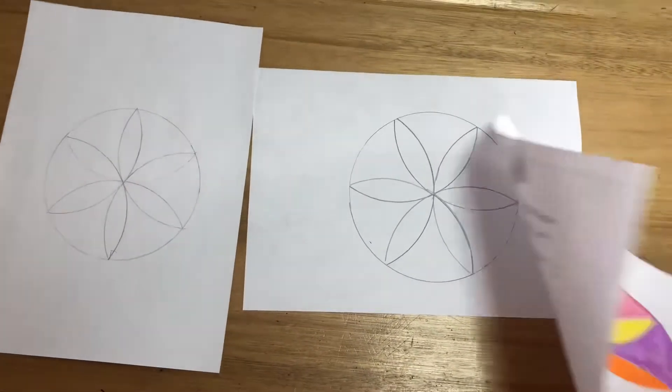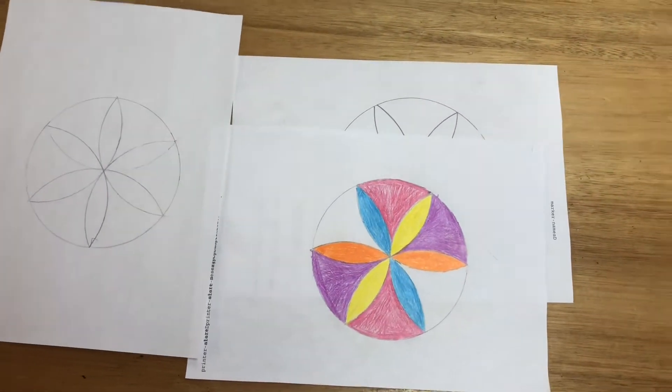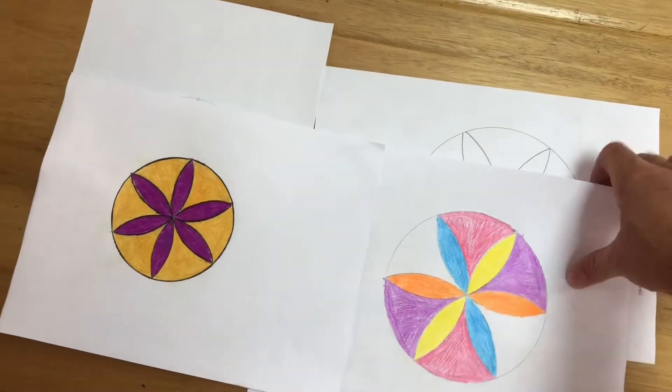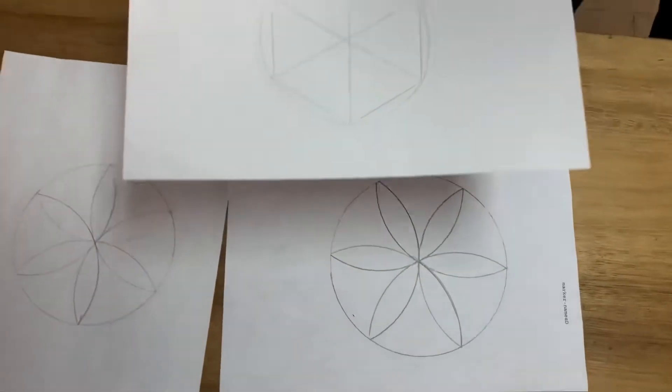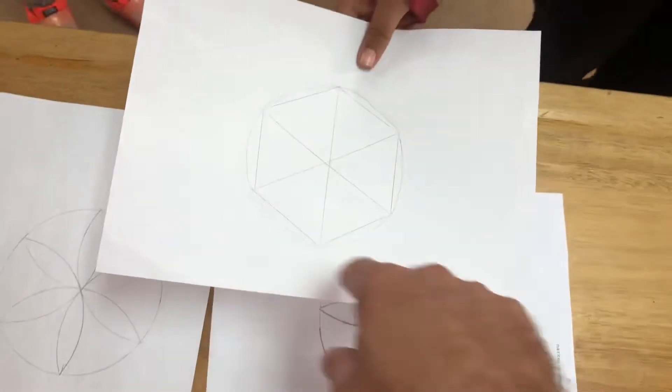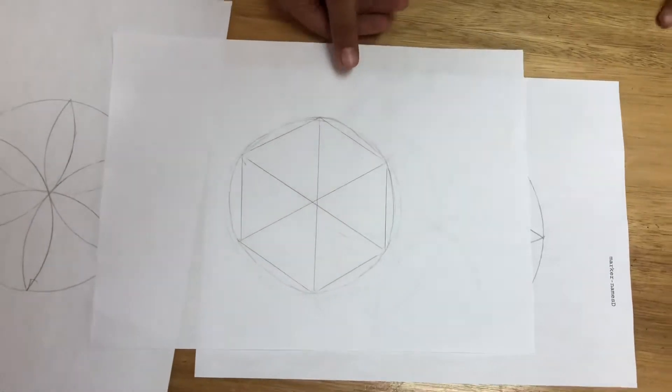And as we look, we can see what some of those finished products look like once we've colored them in. But there's something else we can do using a compass. What can you do there? With that same idea of getting those six corners, what shapes do you make there? A hexagon. Okay.